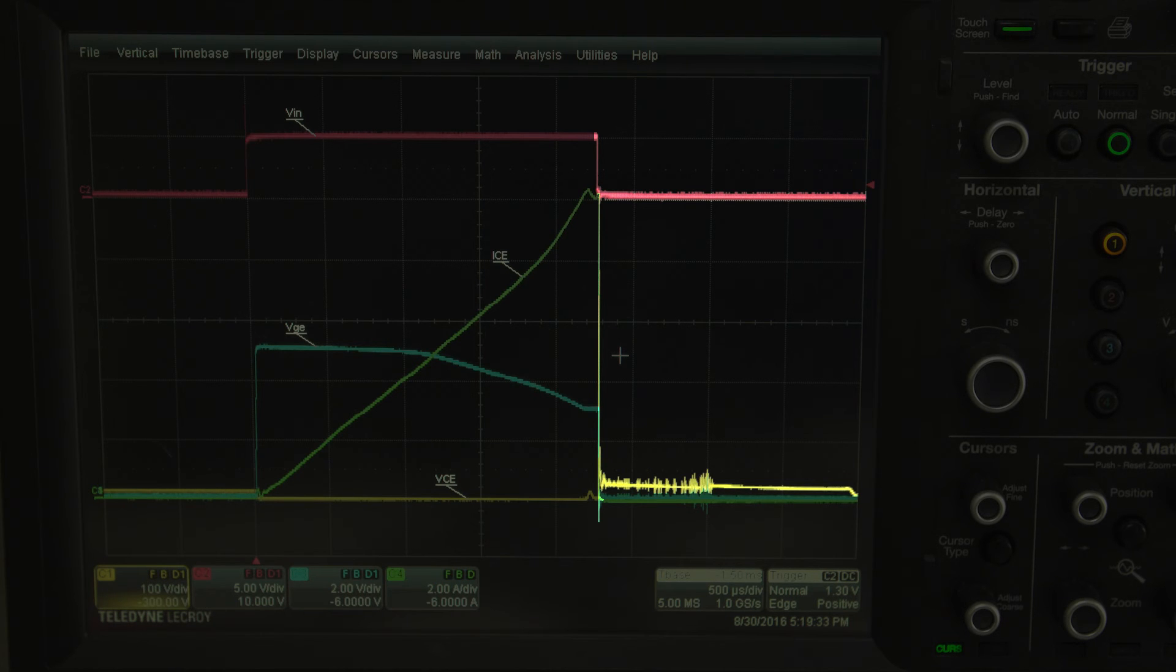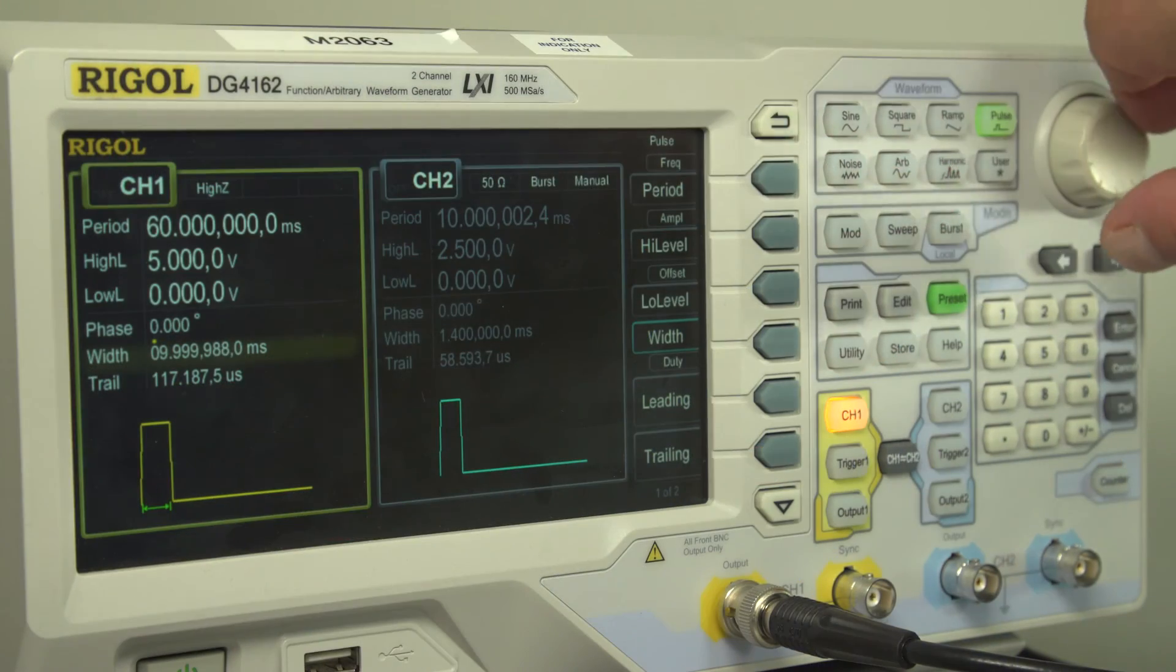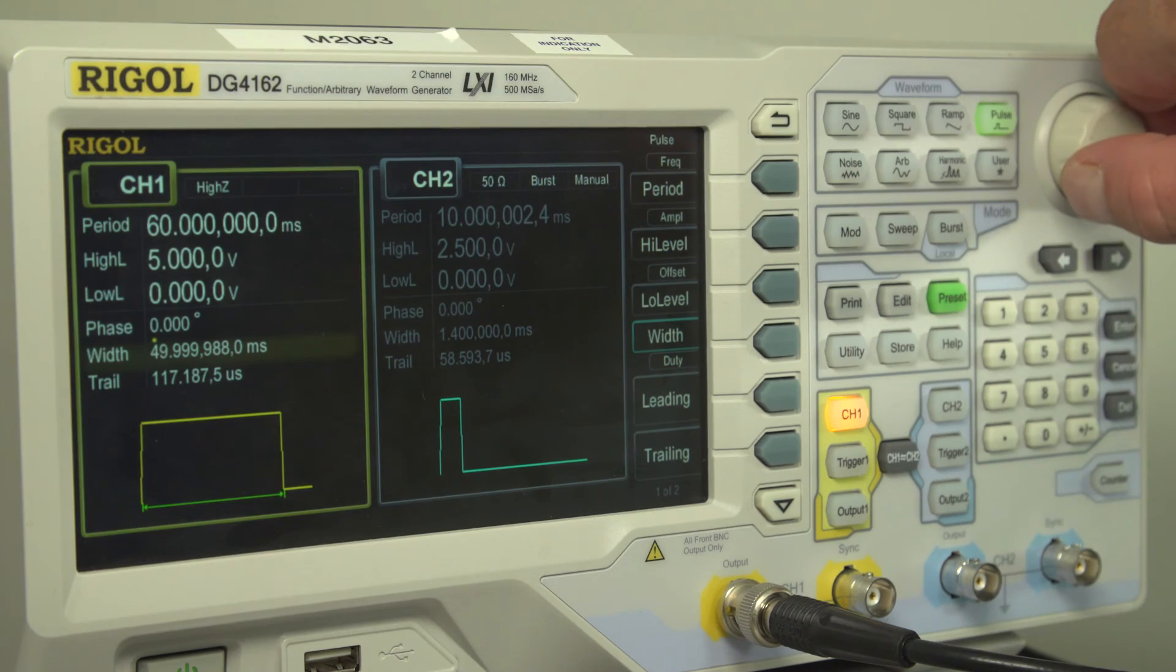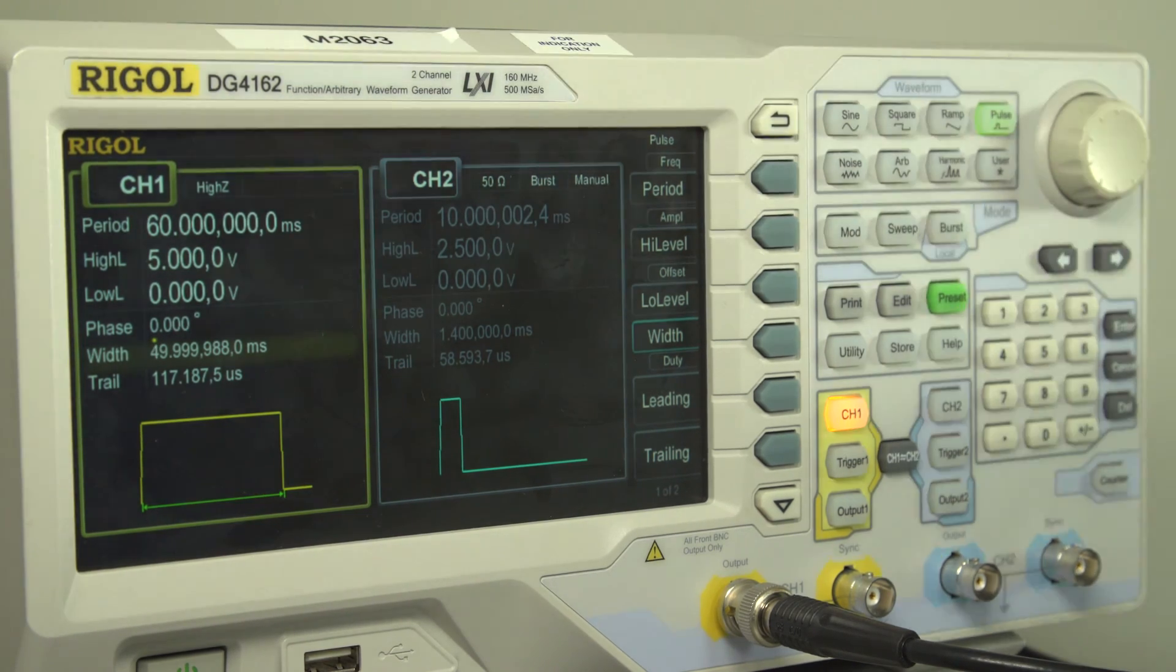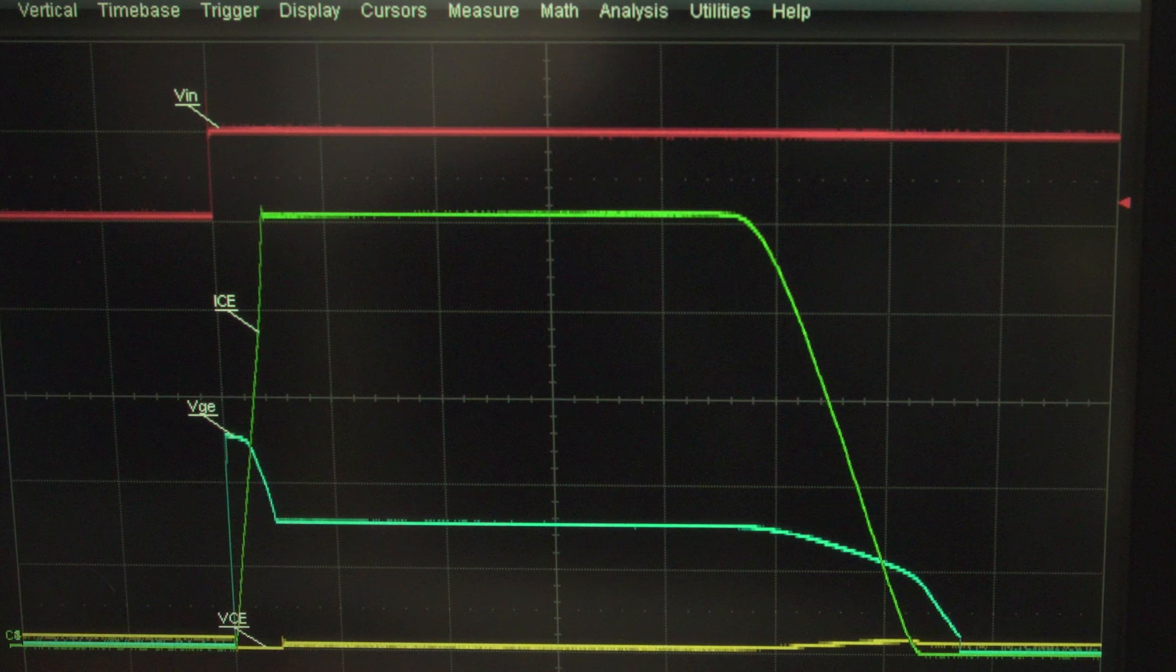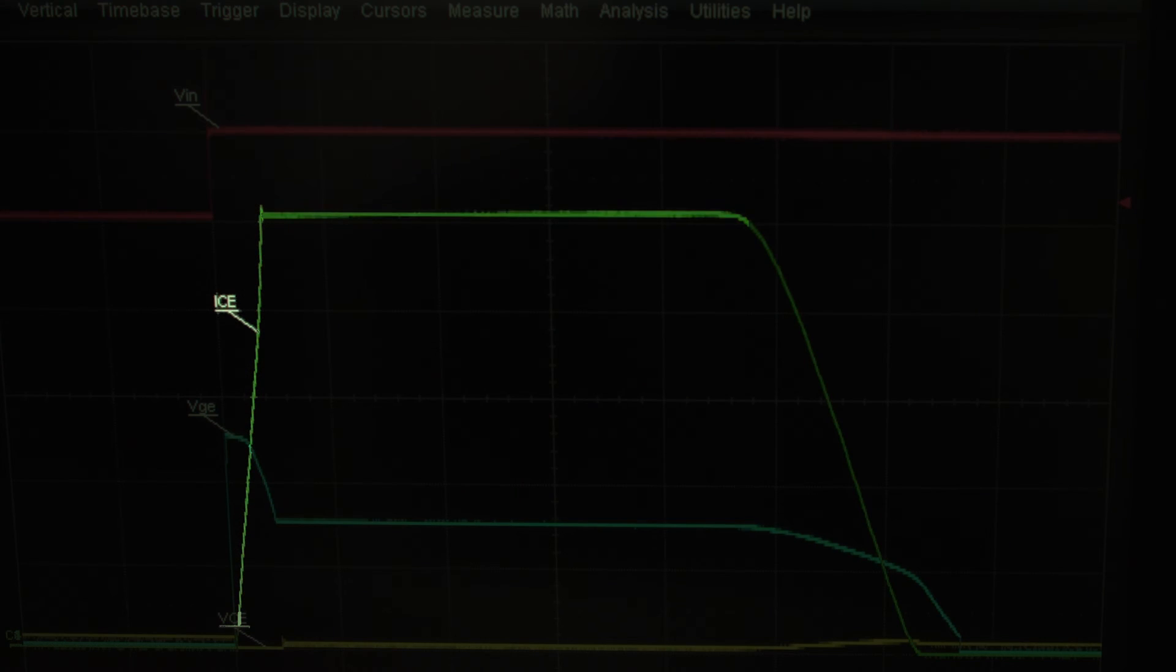We can observe the current limiting and soft shutdown features of the system by adjusting the signal generator pulse frequency and pulse width. First we'll change the pulse width to 50 milliseconds. This will keep the coil charged longer. Once the coil reaches the current limit level, the driver will maintain the current and prevent overheating of the coil. The current limit level can be adjusted by changing the current sense resistor. Consult RD576 for more information on how to make this adjustment.